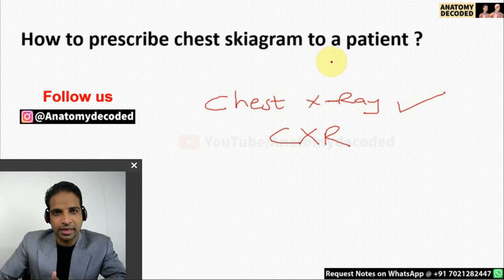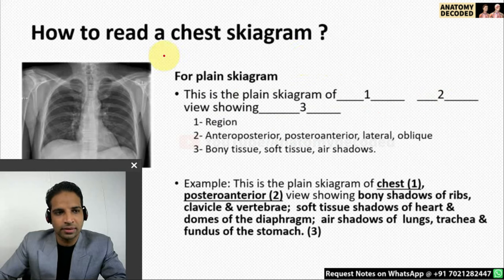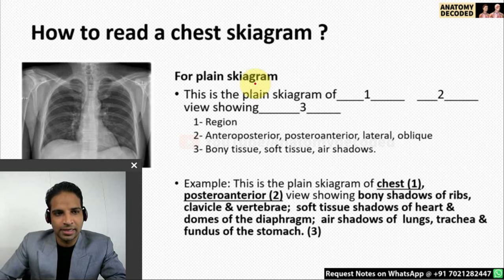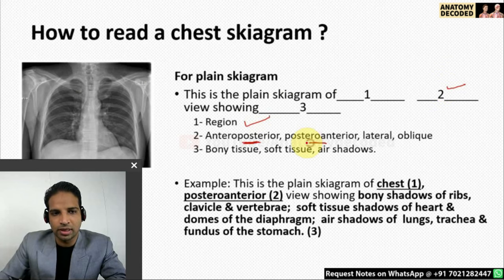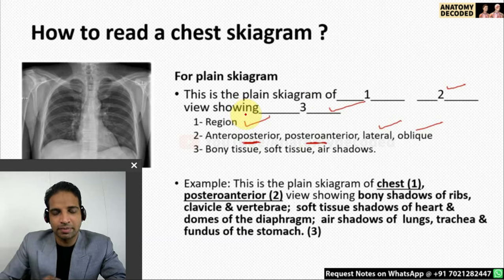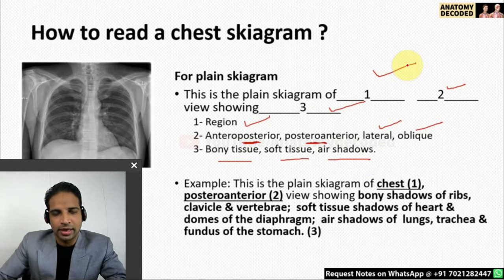When the patient presents you with the skygram, the next step is how to read it. We have a simplified pro forma for reading a skygram. This is the plain skygram. How to start reading: one refers to the region you are describing, two is the view — either antero-posterior or posterior-anterior, or there may be lateral and oblique views. Then you describe which structures are visible: the bony tissue, the soft tissue, and the air shadows.